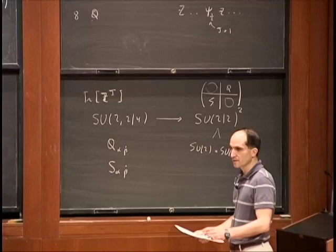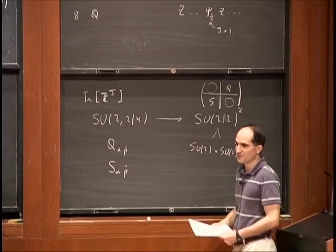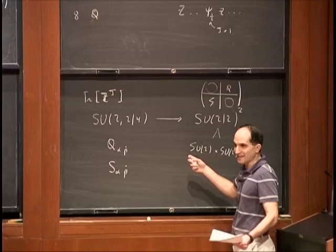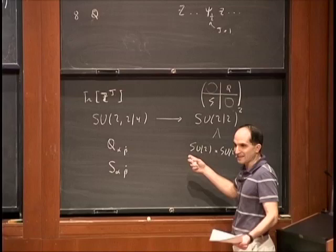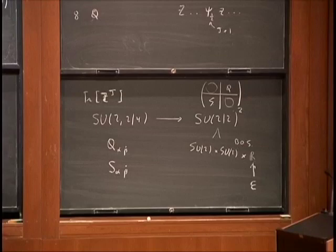I didn't mention one important thing: S here means supertrace. So for supergroups, S means supertrace. The identity matrix here has supertrace zero, so it's really SU(2). But you will see that it's actually not even this group — there's an important new thing that we are going to get to.